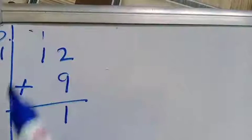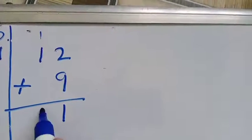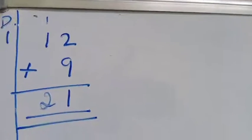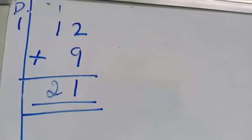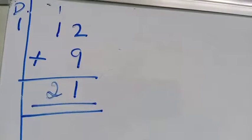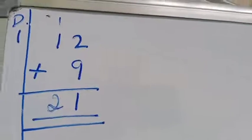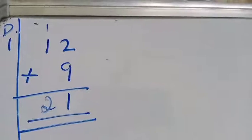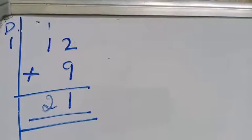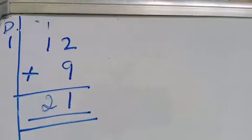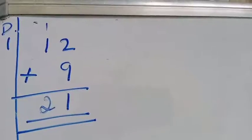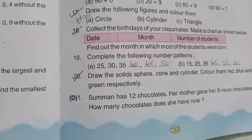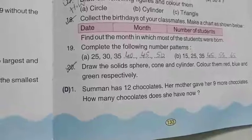Now 1 plus 1 is how much, children? 2. So how many chocolates does Suman have now? Total 21 chocolates. The number of chocolates is 21, so we got the answer 21.